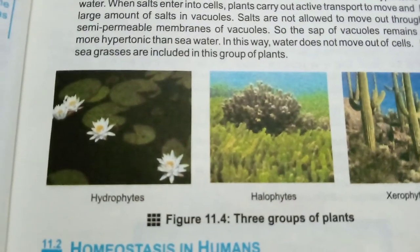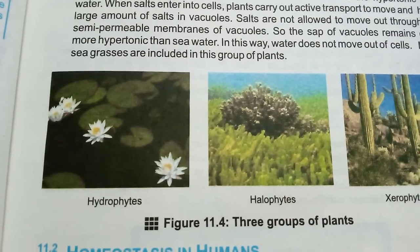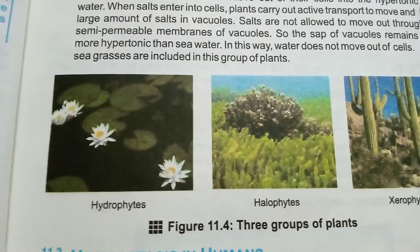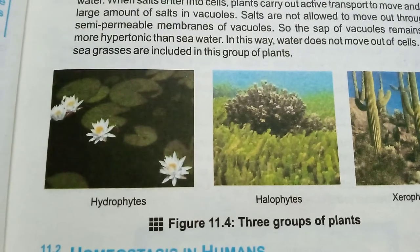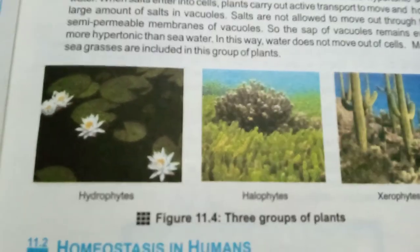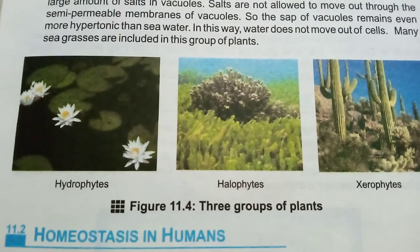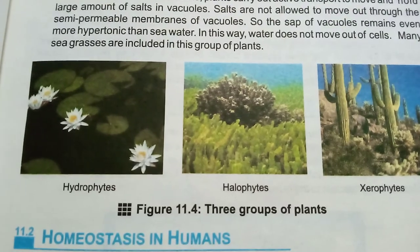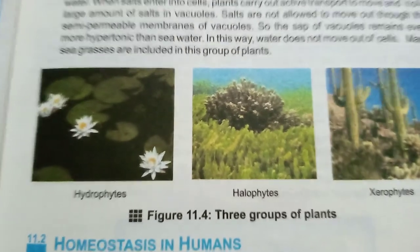Now we come back to the topic of osmotic adjustment in plants. It depends on how much water and salt are available for the plant. Based on this, plants are divided into three groups: hydrophytes, halophytes, and xerophytes.